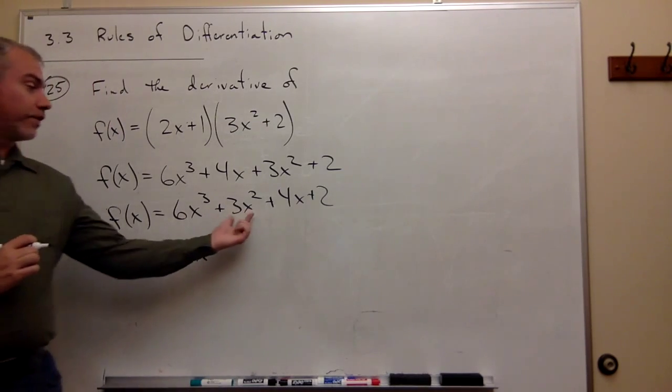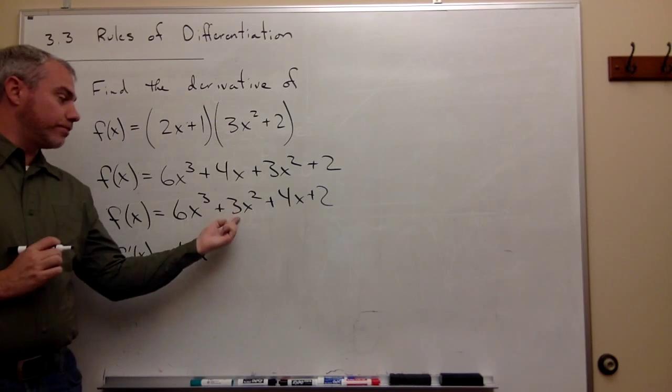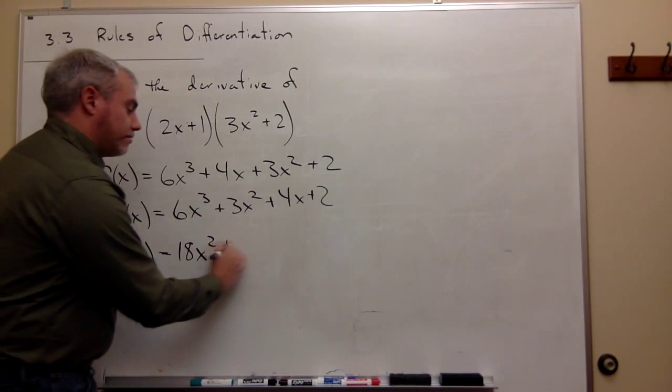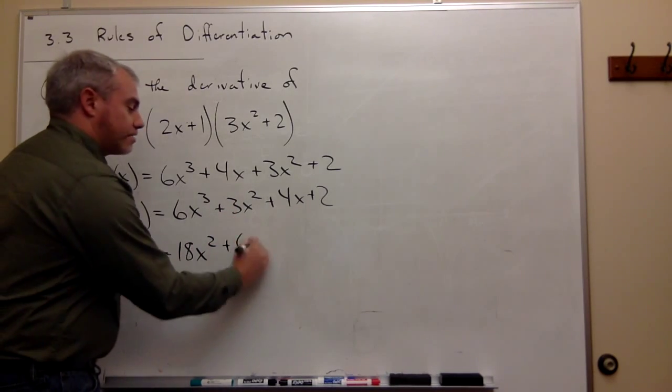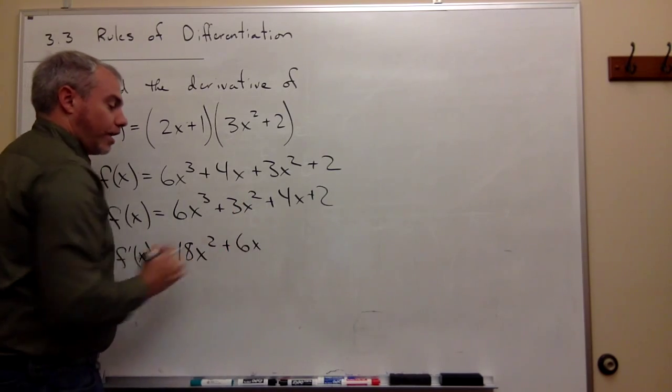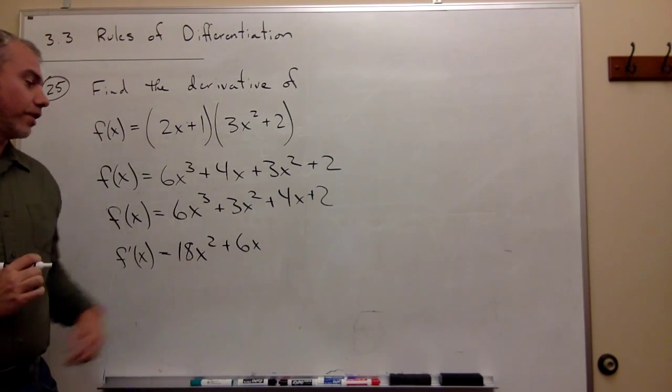For the next term, I bring the 2 down, multiply it by the 3, which gives me 6, times x to the 2 minus 1, which is 1, so 6x to the first.